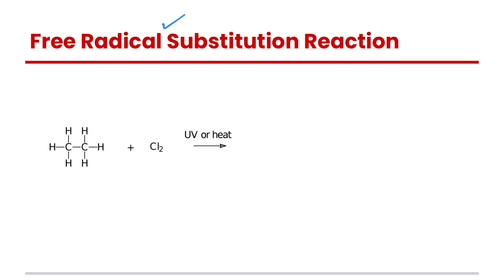Let's start with the free radical substitution reaction. This is the reaction of alkanes, so I'm showing ethane here but this can be any alkane, reacting with a halogen - it can be either chlorine or bromine. If you have a catalyst such as UV or heat, and catalysts are always written above the arrow and they're really important to include, because if you didn't have UV or heat here this reaction would not happen.